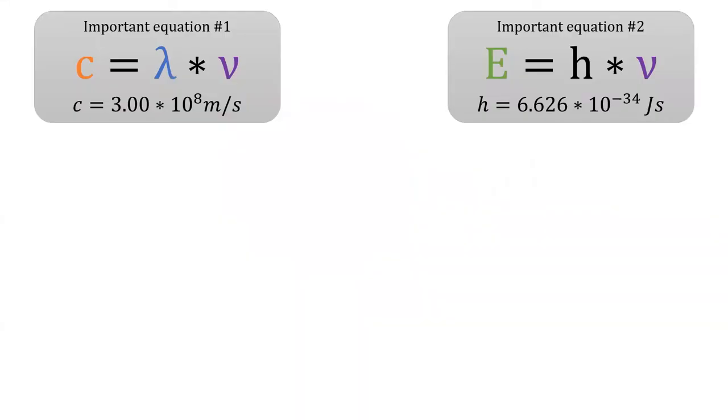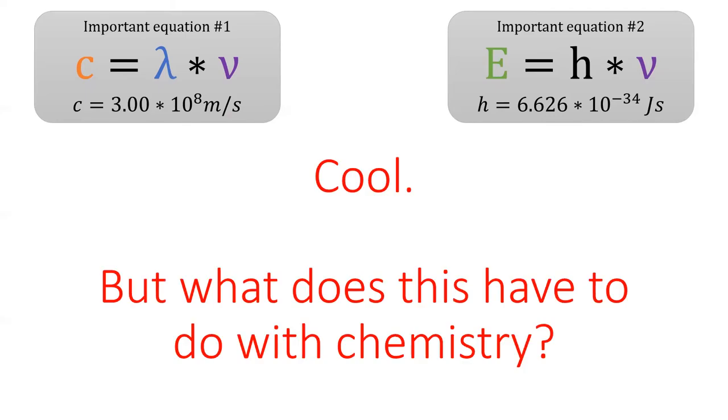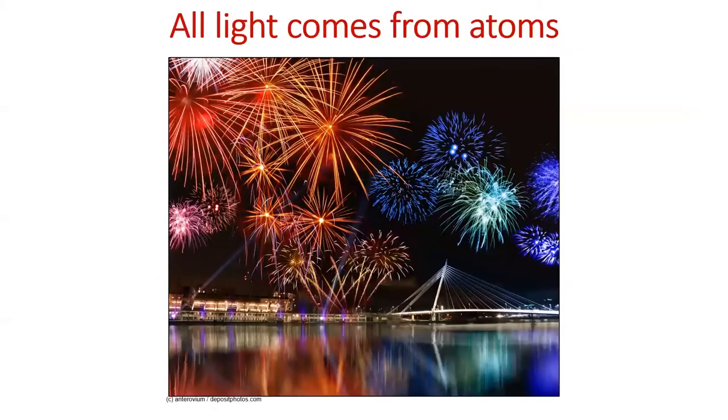Up until this point, we've been learning some neat properties of light, but we have not really connected these to any specific chemical concept. So what do all these properties of light have to do with chemistry? Well, to put it simply, all light comes from atoms. Specifically, all light comes from electron transitions inside atoms.